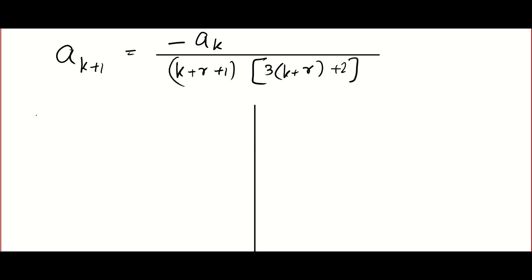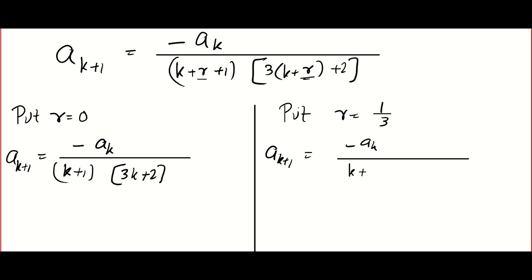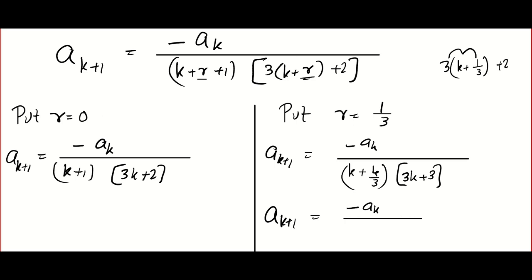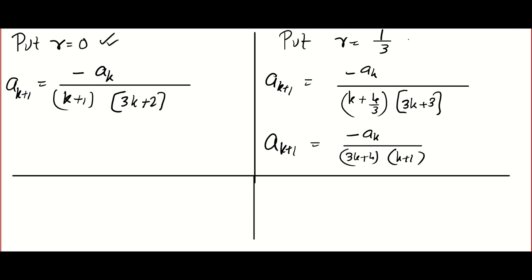Now we plug in the two values of r. For r = 0, the reduction formula becomes a_(k+1) = −aₖ / [(k+1)(3k+2)]. For r = 1/3, it becomes a_(k+1) = −aₖ / [(k+4/3)(3k+4)/3], which simplifies to a_(k+1) = −aₖ / [(3k+4)(k+1)/3].